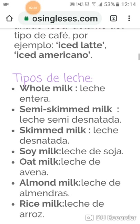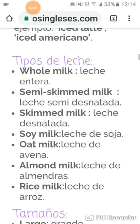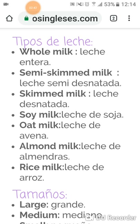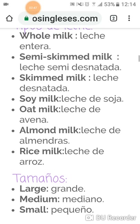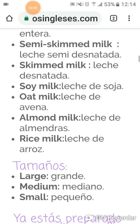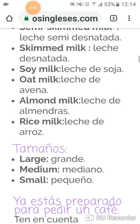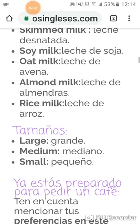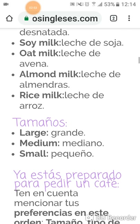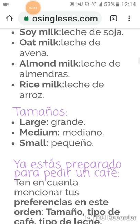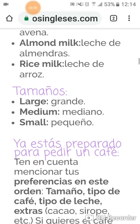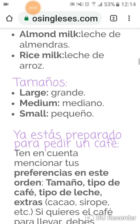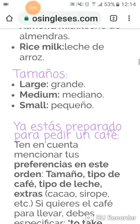Aquí tenéis tipos de leches también. Por ejemplo: whole milk — leche entera; semi-skim milk — leche semi-desnatada; skim milk — leche desnatada; soya milk — leche de soja; oat milk — leche de avena; almond milk — leche de almendras; rice milk — leche de arroz.